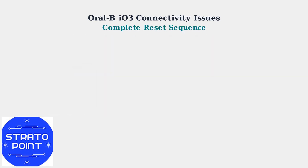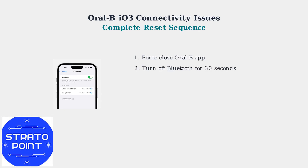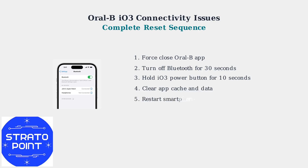The most effective solution is a complete reset sequence. First, force close the Oral-B app completely. Then turn off your smartphone's Bluetooth for 30 seconds. Hold the IO3 power button for 10 seconds to perform a full reset. Clear the app's cache and data, restart your smartphone, and finally re-enable Bluetooth to attempt pairing again.